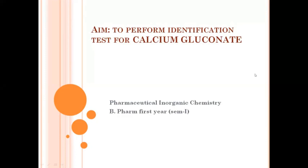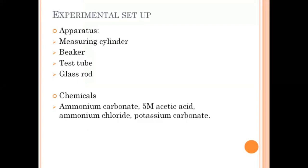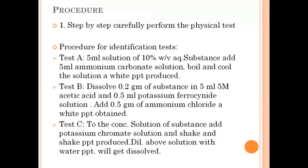Good morning students. Today we are going to perform the pharmaceutical inorganic chemistry practical for first year, first semester. Our aim is to perform identification tests for calcium gluconate. The apparatus required includes a measuring cylinder, beaker, test tube, and glass rod. The chemicals required are ammonium carbonate, acetic acid, ammonium chloride, and potassium carbonate. Identification tests are prescribed in the pharmacopoeia to check the quality of the drug, pharmaceutical aids, or any reagent required.